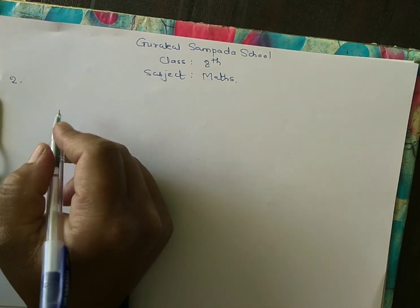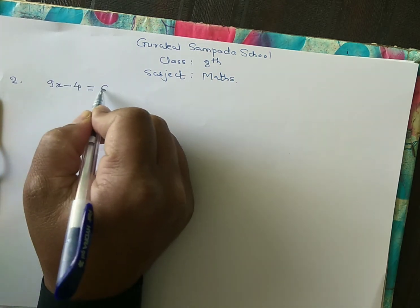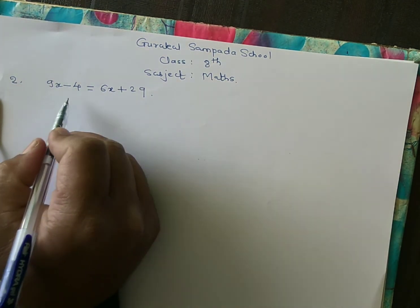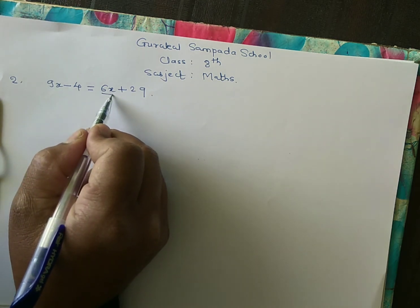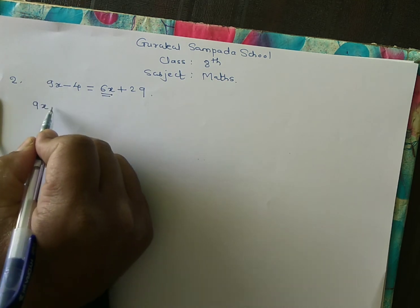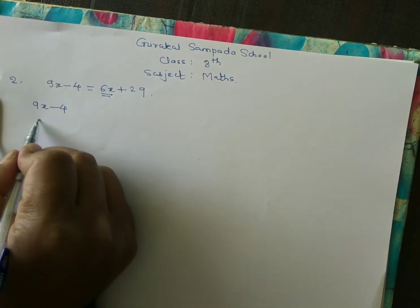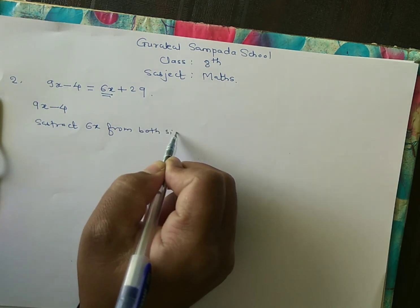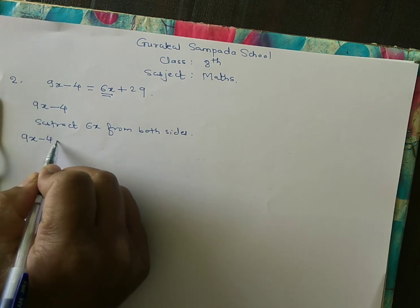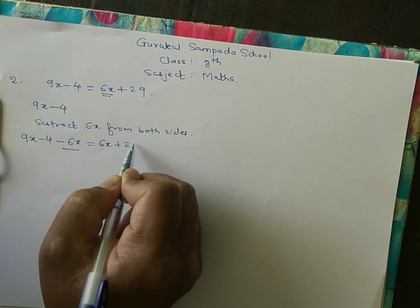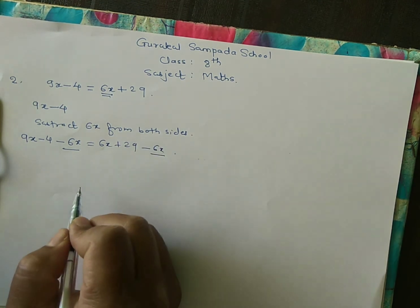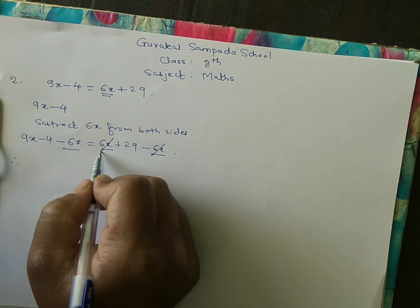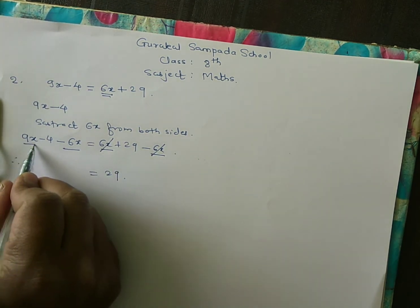Now we will solve one more example: 9x minus 4 is equal to 6x plus 29. The first operation is to cancel the 6x term. We subtract 6x from both sides: 9x minus 4 minus 6x equals 6x plus 29 minus 6x. The 6x terms cancel, and 9x minus 6x gives 3x minus 4 equals 29.